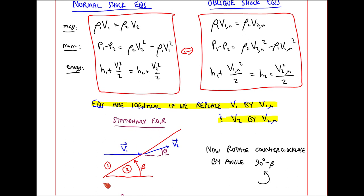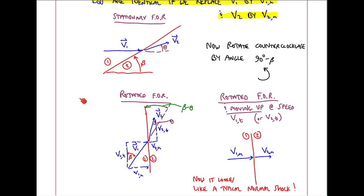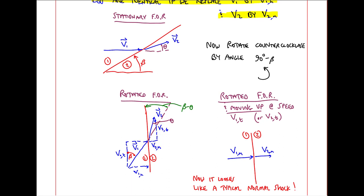In the typical stationary frame of reference, we have the oblique shock, V1, with turning angle theta, and shock angle beta. Of course, one before the shock and two after the shock. Now let's rotate this whole thing by 90 degrees minus beta, which will make, in our rotated frame of reference, the shock be vertical. So V1 comes in at this angle, V2 at this angle. We still have one and two across the shock. And I split the velocities into the two components on each side. This angle is beta minus theta, and the shock angle is here, beta. Now we take this rotated frame of reference, and we move up at speed V1T, or V2T, since they're the same.